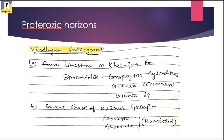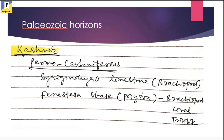The first one is your Proterozoic age horizons. The Vindhyan Supergroup of rocks holds a rich amount of Proterozoic fauna. In the Fawn Limestone of the Khemjia Formation, it holds stromatolites like Conophyton cylindricus, Polenia columnarisis, and Polenia sp., which are different stromatolite fossils preserved there. Then next is the Suket Shale in the Kaimur Group of the Vindhyan Supergroup, which holds different brachiopod fossils of Proterozoic age — Formoria and Acrothele.